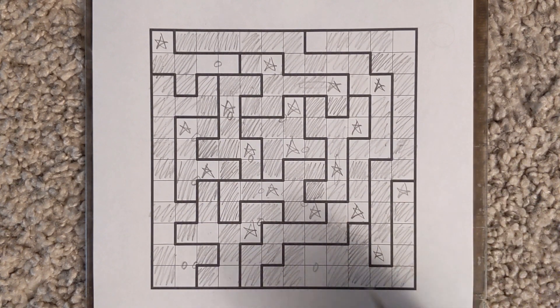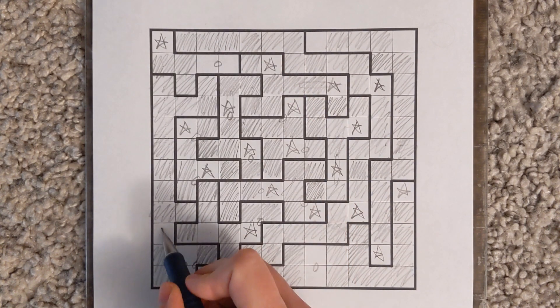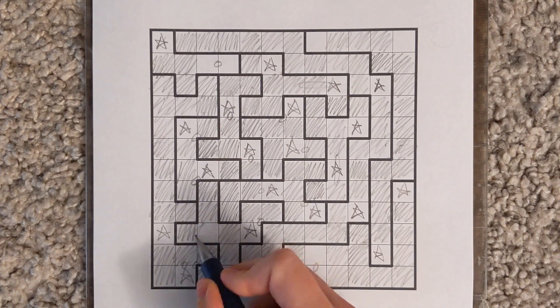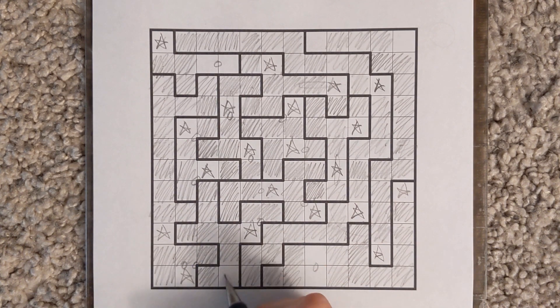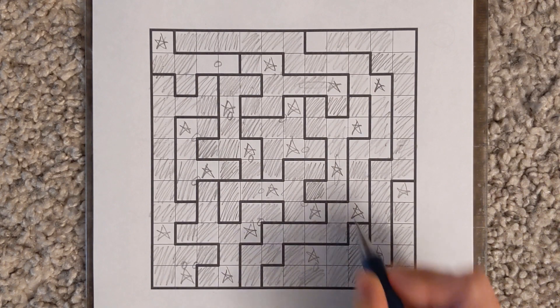Two are in this row, so the last star has to be down here. Got one more in this row that fills up to here.